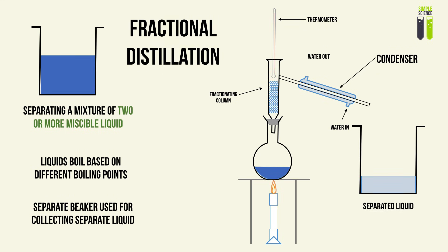Similar to simple distillation, we have a condenser whereby at specific temperatures the pure liquids will vaporize, condense, and be separated into a beaker. Each time you collect a different liquid, you use a separate beaker. We heat up and extract the liquids in order of their boiling points — the liquid with the lowest boiling point vaporizes and is extracted first, followed by the one with the second lowest boiling point.